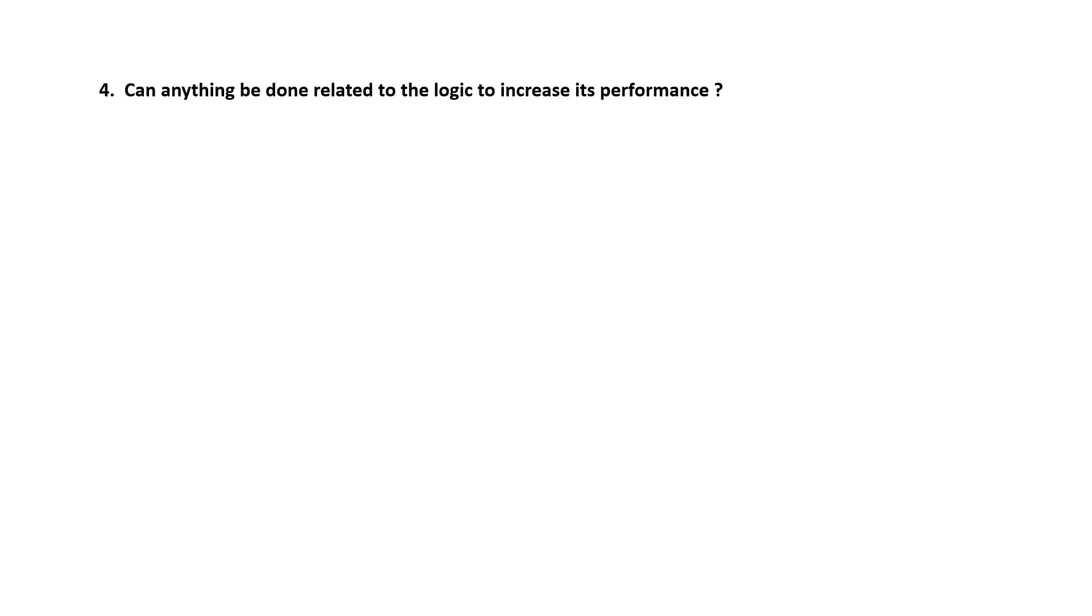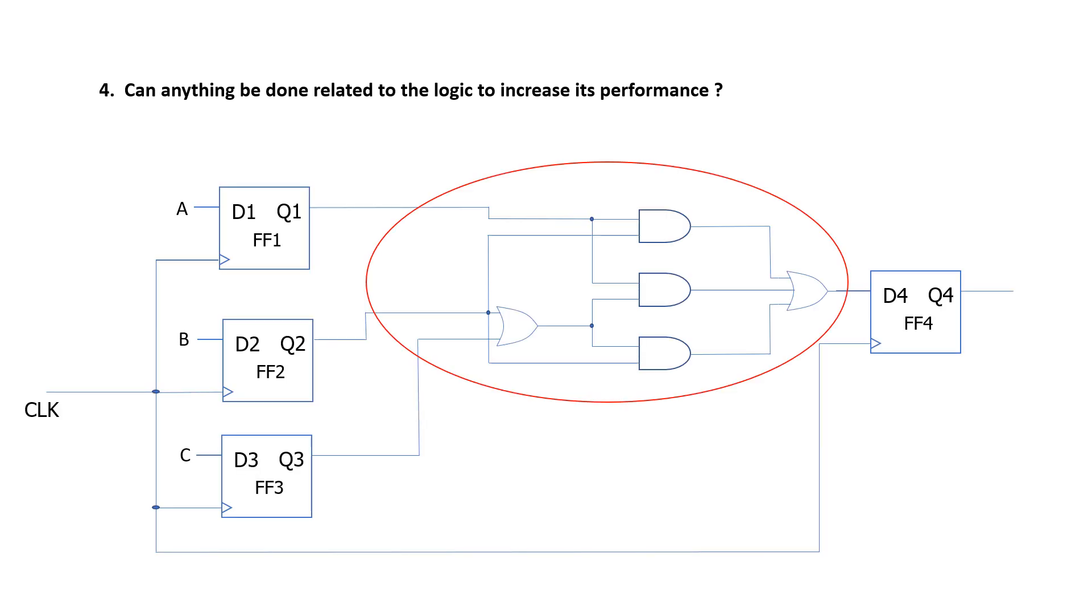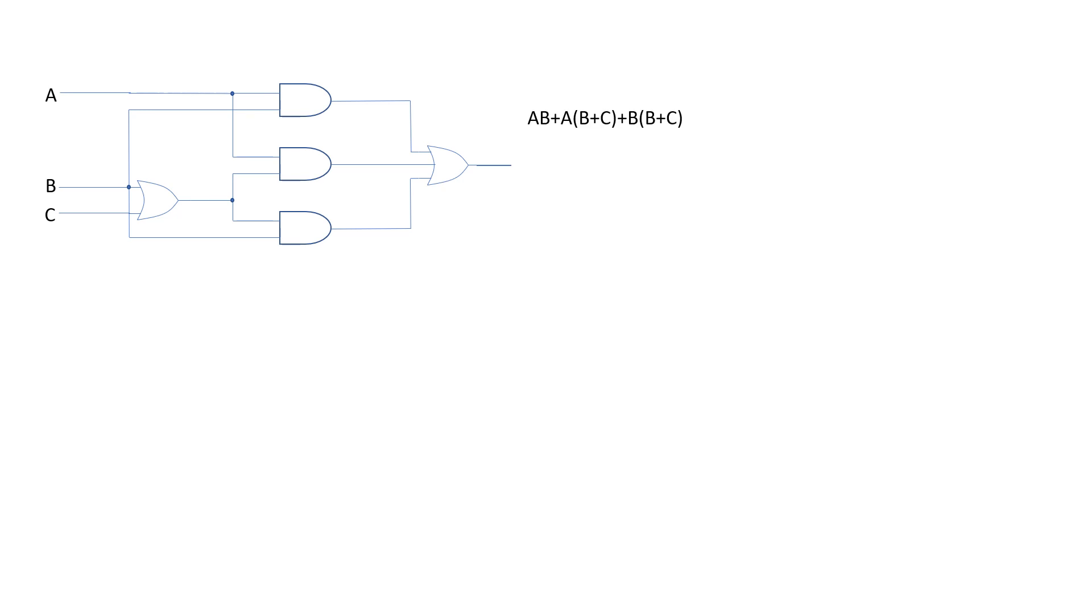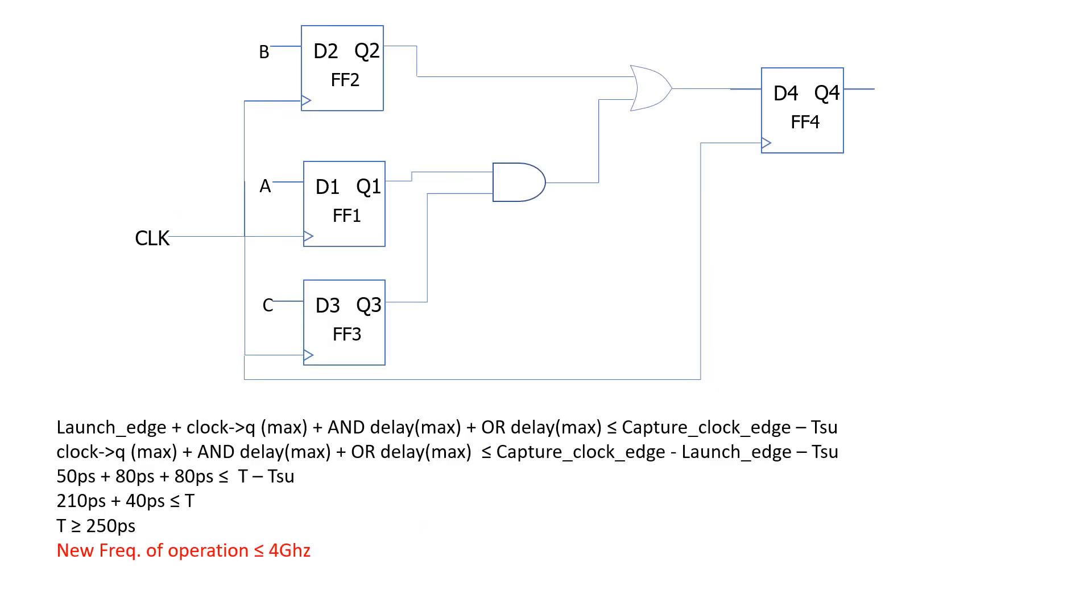Next question, can anything be done related to the logic to increase its performance? The boolean expression for this combinational block is a and b OR with a and b or c OR with b and b or c. Let's try to simplify this boolean expression. Simplifying it, we can reduce the boolean expression to b OR with a and c. Now the highest number of logic levels has reduced from 3 to 2. So now let's use this new block and determine the maximum frequency of operation. The maximum frequency of operation has increased from 3 GHz to 4 GHz.